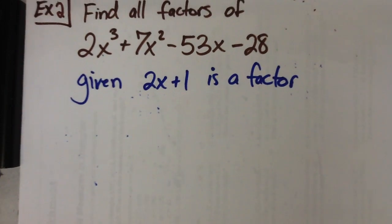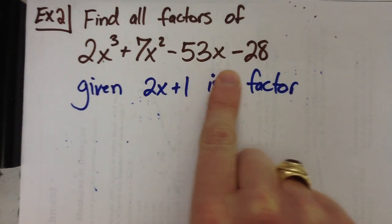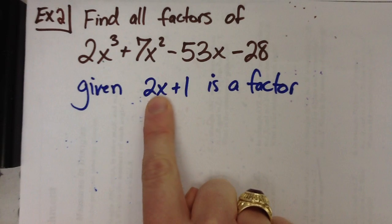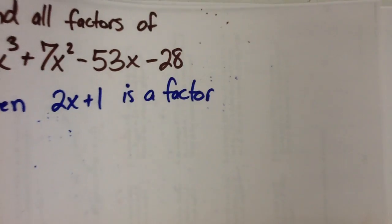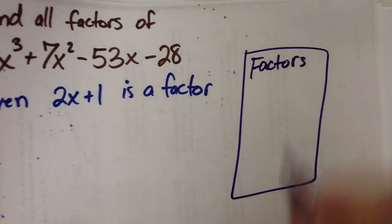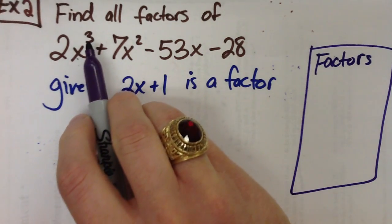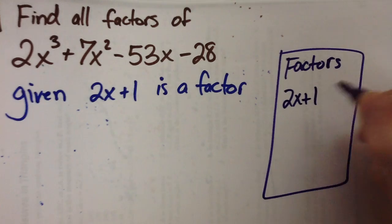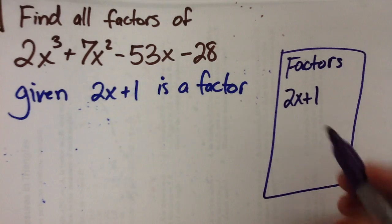All right. Let's try another example. Found all the factors of 2x cubed plus 7x squared minus 53x minus 28, given that 2x plus 1 is a factor. So somewhere off to the side, I'm going to make a list of factors. I'm going to have a few factors. I do know I'm going to have three, because the degree is three here. So three factors. I do know 2x plus 1 is the first one, because they gave it to me. So I'll need to get two more.